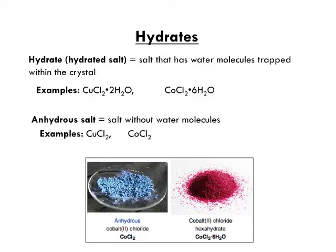First, what are hydrates? Hydrates are hydrated salts—salt is another term for an ionic compound. They are salts that have water molecules trapped within the crystal. There are a couple examples here: copper(II) chloride with two water molecules, and cobalt(II) chloride with six water molecules. That's what a hydrate is. Other salts don't have water in them and are called anhydrous salts.